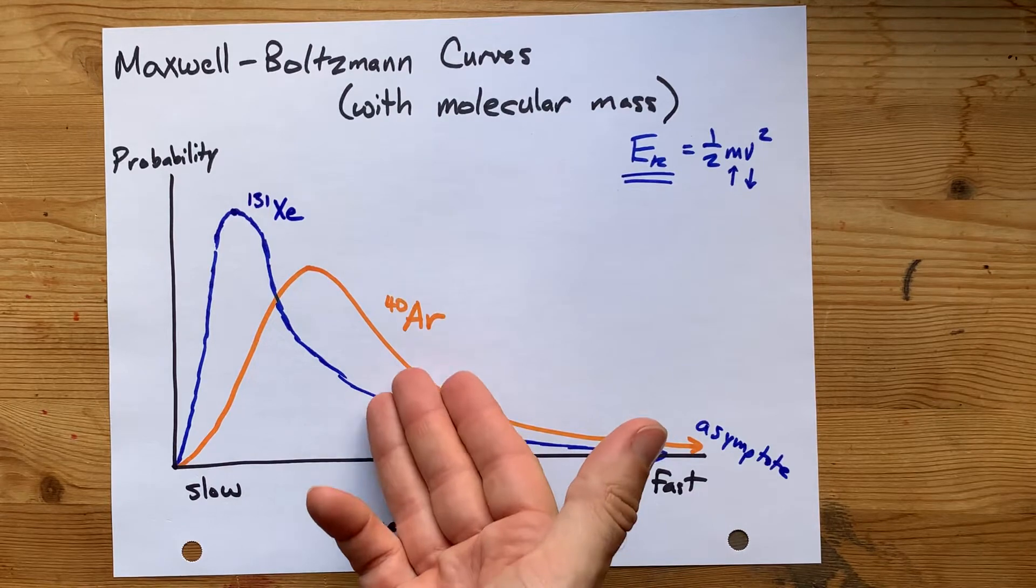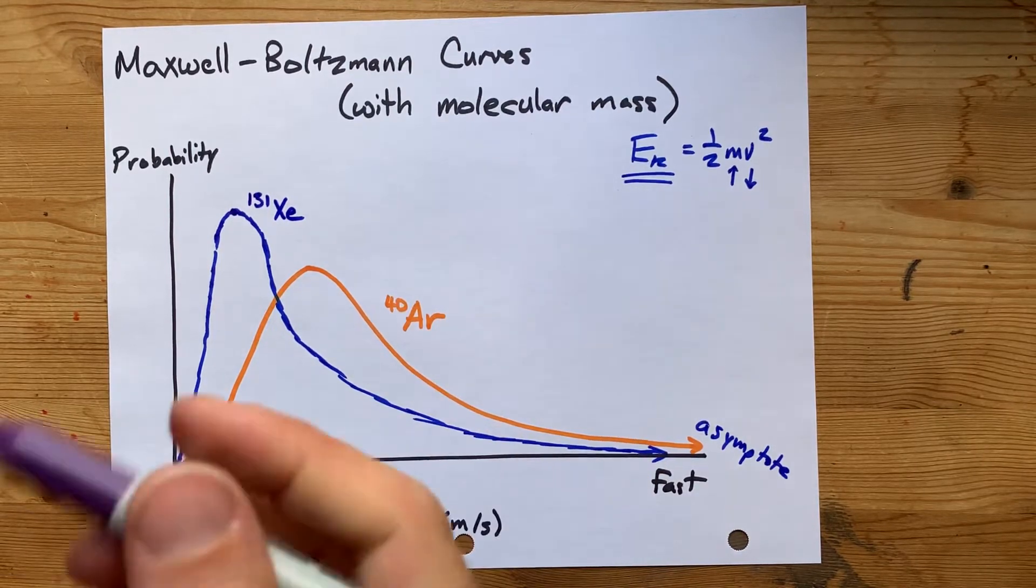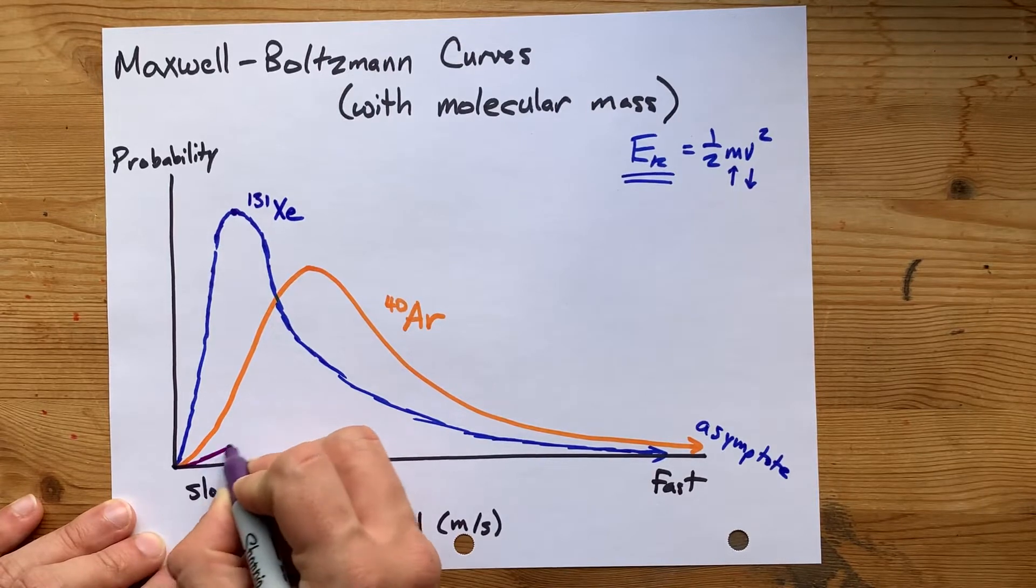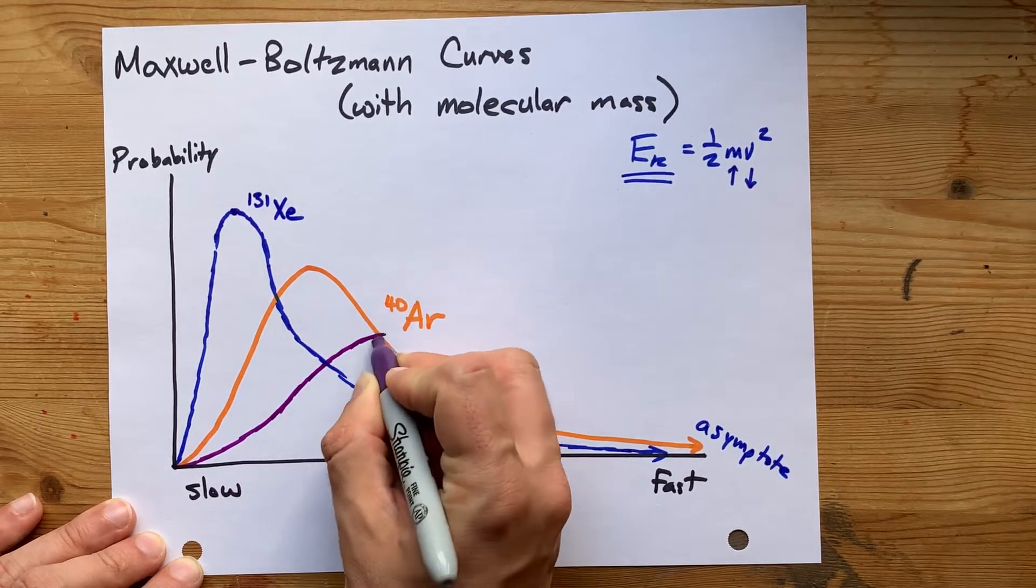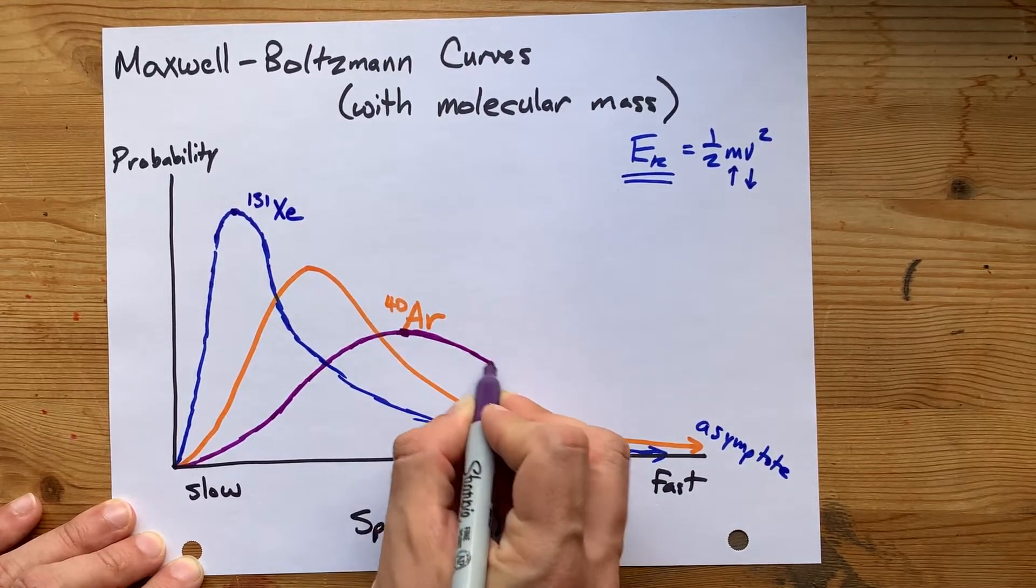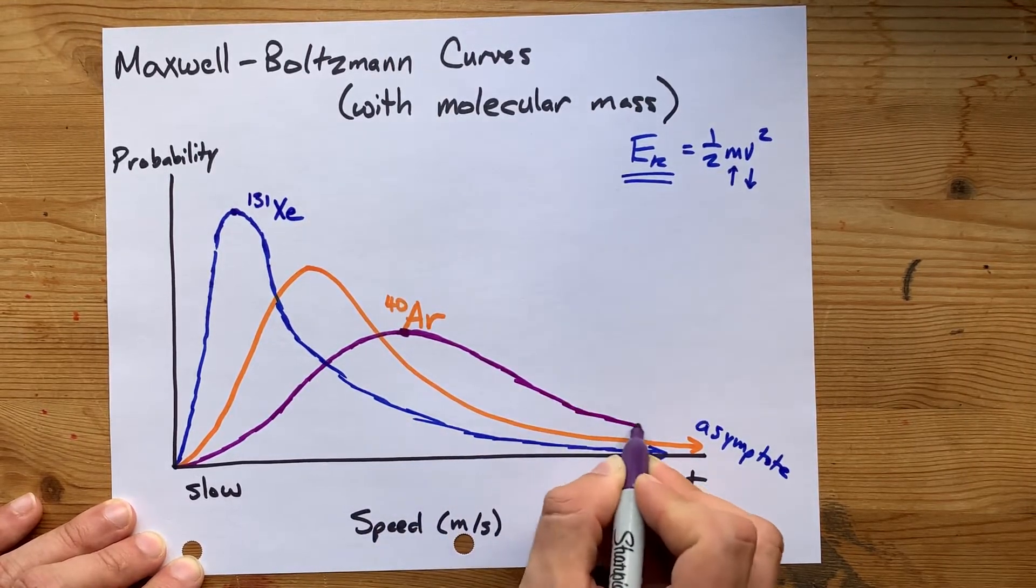And if you have an even lighter particle than that, I want you to move the peak down and to the right from there. So again, it's going to be a hump graph, but you've got to peak down and to the right compared to where you did for the more relatively heavier particles.